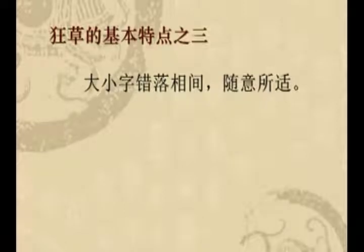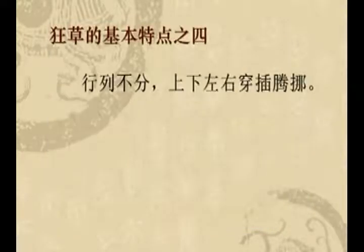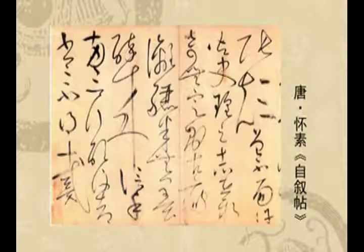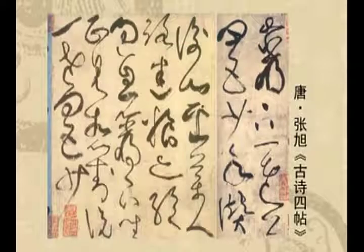狂草的主要特征：第一个特点是整行字一笔连绵不断；第二点是经常一个字占一行；第三个特点是大小字错落相间；第四点是行列不分、上下左右穿插腾挪；第五点叫做墨色淋漓。